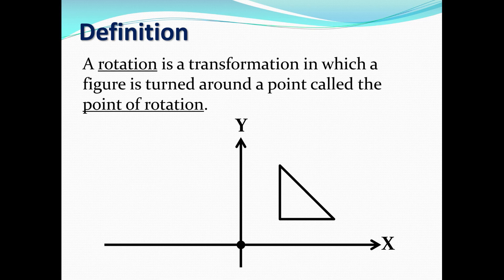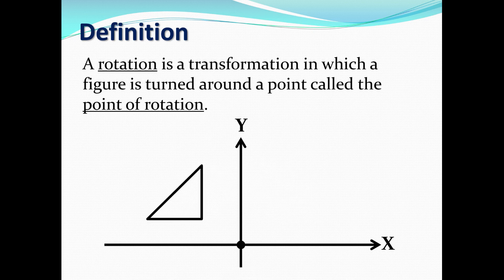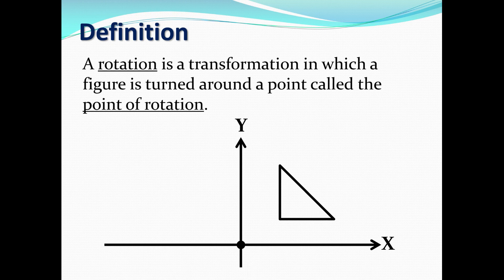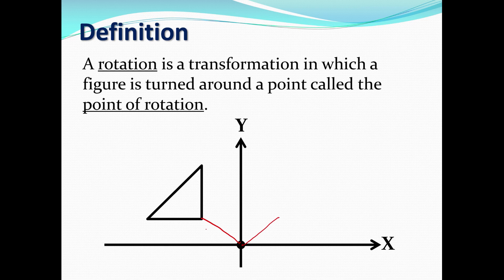A rotation is a transformation in which a figure is turned around a point called the point of rotation. For example, the triangle is being rotated about a point of rotation — in this case, it's the origin itself. You can think of it as kind of like a radius. So you draw it in like this, end up at this point, and you basically rotate the triangle this way.